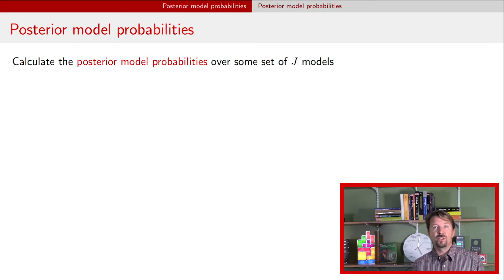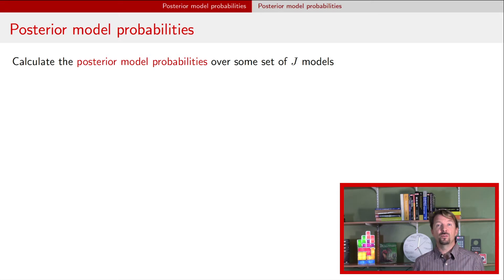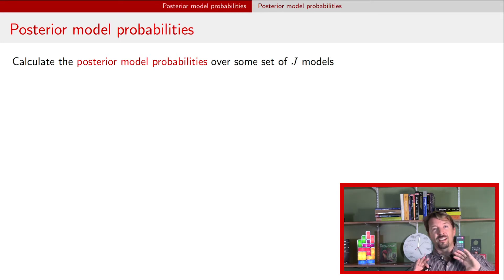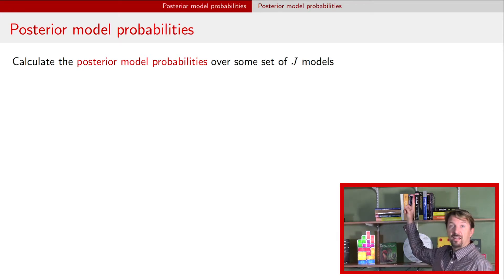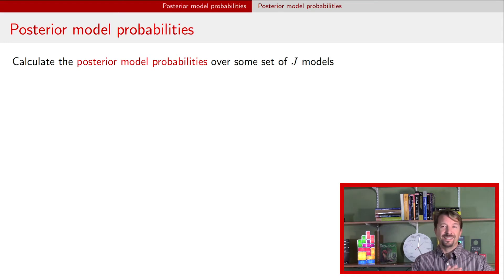Previously we've always had just two hypotheses — a null and an alternative — but there's no reason from a Bayesian perspective, number one, to treat either of those hypotheses differently, and number two, to limit it to two hypotheses. The formulation we're going to talk about right now is not limited to the number of models: we can have J models, an arbitrary number, and there's no special treatment for one hypothesis versus another.